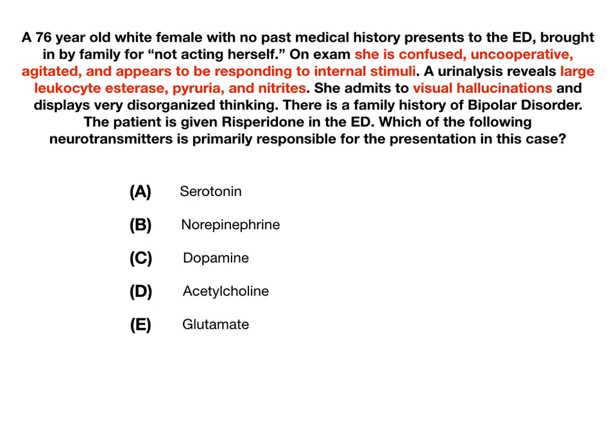Now that you know what's going on, you know this patient has altered mental status and the evidence argues in favor of delirium due to a urinary tract infection. The correct answer is acetylcholine. This is a tricky but very high yield question. Most people will pick dopamine — they'll either think it's a primary psychotic disturbance like schizophrenia or bipolar, or they'll know it's delirium but still not know the pathophysiology and assume dopamine because all you hear about in question banks and First Aid is dopamine. Everybody thinks that if you have hallucinations, the neurotransmitter involved is dopamine. And oftentimes that's correct — but in the case of delirium, it's acetylcholine.